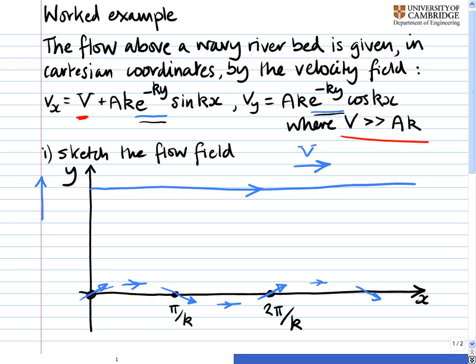So now we can start to draw in a streamline at the bottom that joins up these velocity vectors. And there's our streamline at the bottom. Now let's again turn our attention to the e to the minus ky term. What that's saying is that as you go up the y-axis in this direction, the velocities are just getting exponentially smaller.